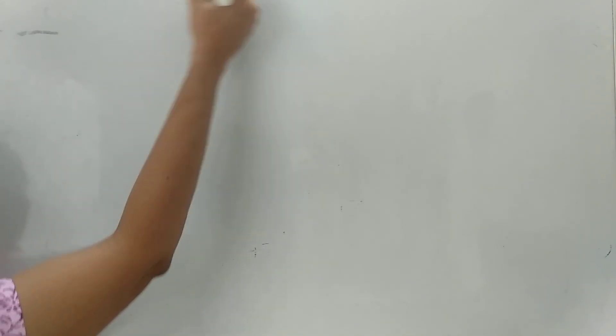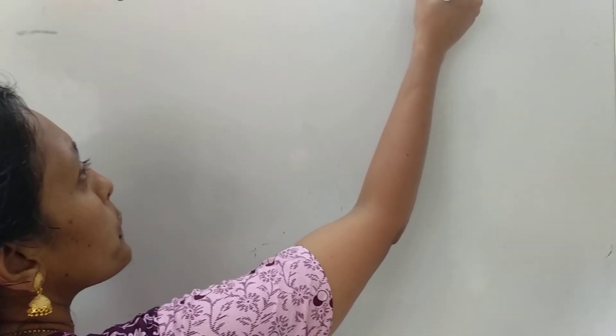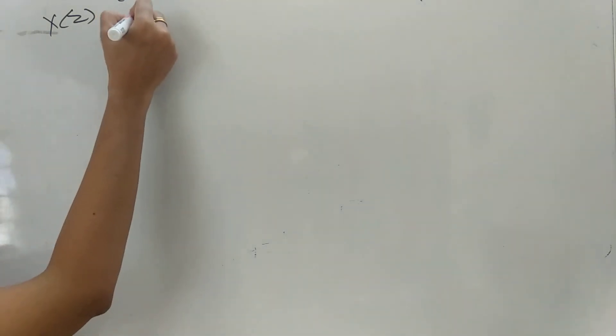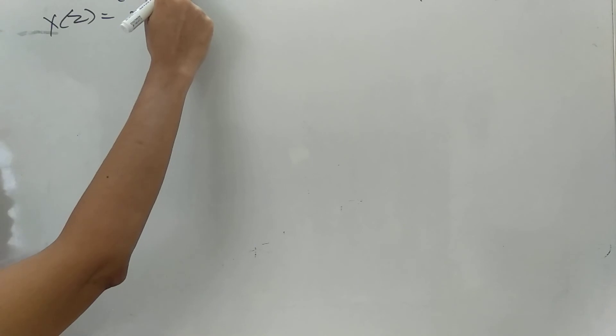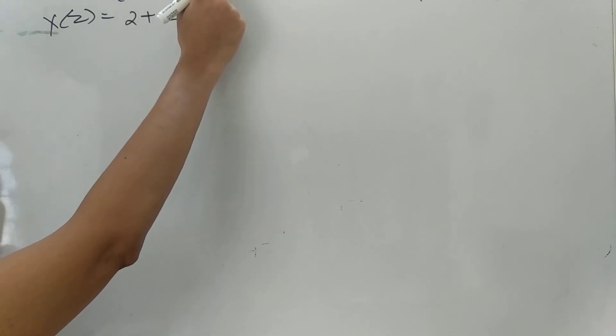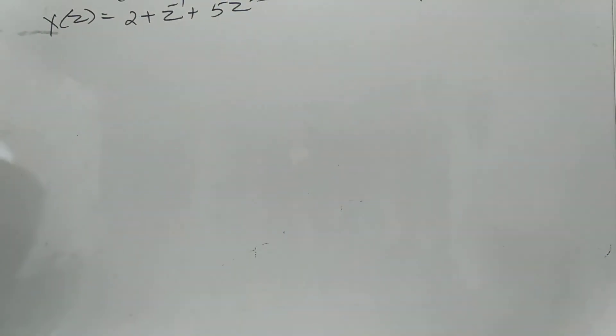Given that X of N equals {2, 1, 0, 0, 5}. As usual, you can write X of Z as 2 into Z raised to 0, plus 1 into Z raised to minus 1, plus 0 into Z raised to minus 2, plus 0 into Z raised to minus 3, plus 5 into Z raised to minus 4. Also H of Z is written as 2 plus 2Z raised to minus 1, plus 1 into Z raised to minus 2, plus 1 into Z raised to minus 3.